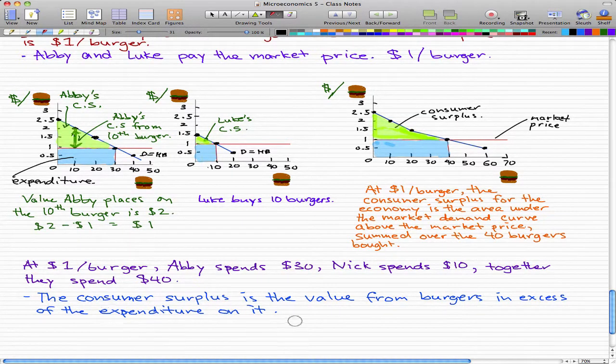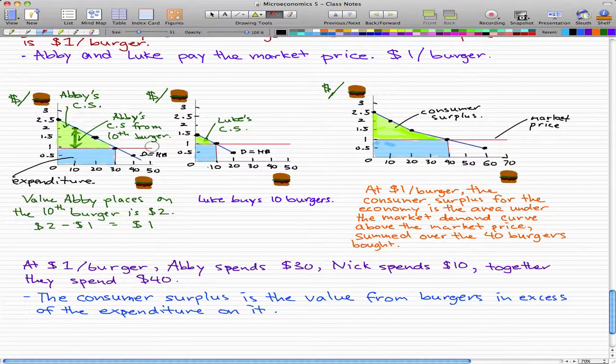Now that is a little confusing at first, but I'm just going to take a little time to explain it. So the best example is using Abby's graph because it's so detailed. This blue line we know is the individual demand curve for Abby, and this red line is the market price.